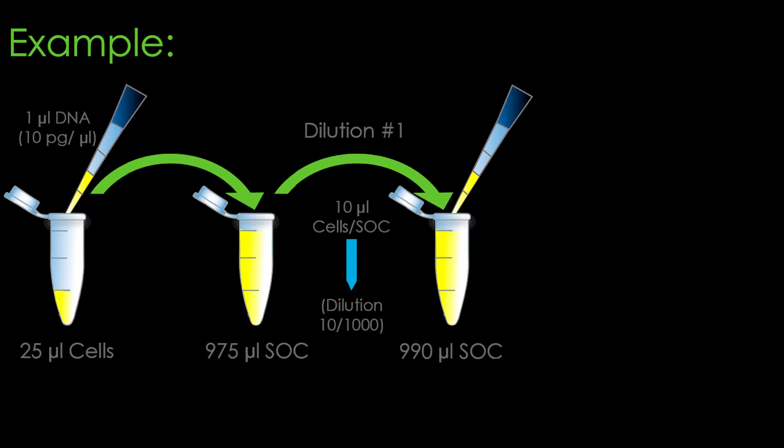From there, you add the suspension into 975 microliters of SOC recovery medium. And then you do your first dilution. So for that first dilution, you take 10 microliters of cell with SOC medium, and you dilute that into 990 microliters of SOC medium. And then from there, you're ready to plate.